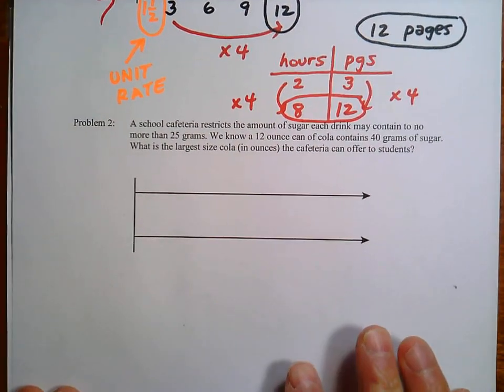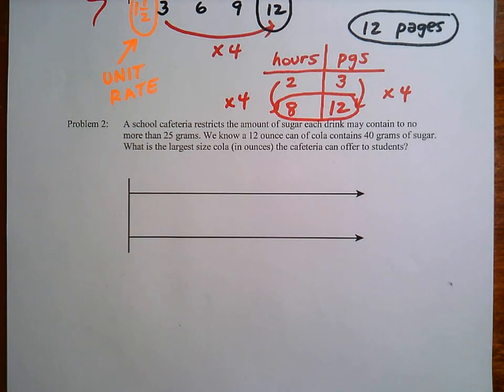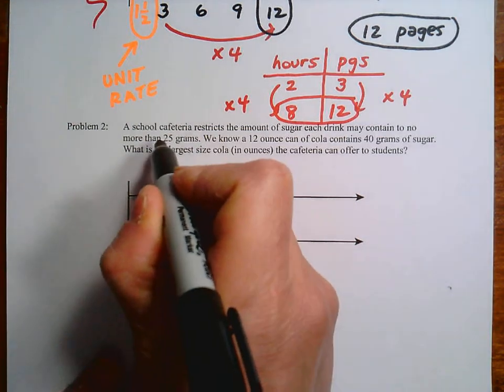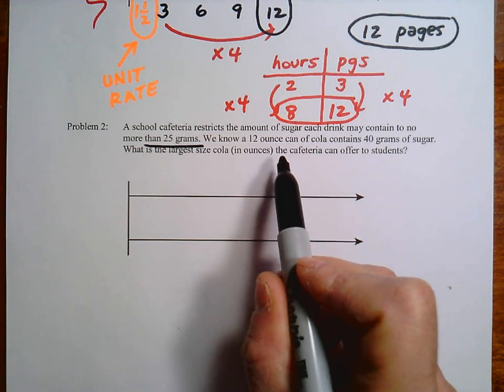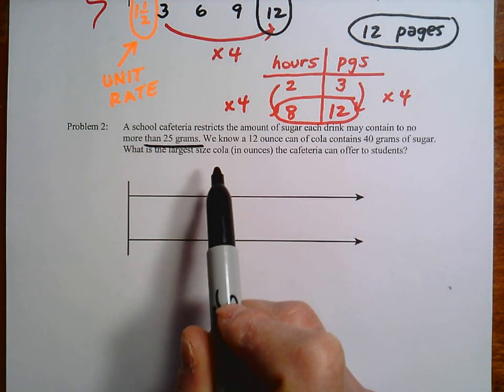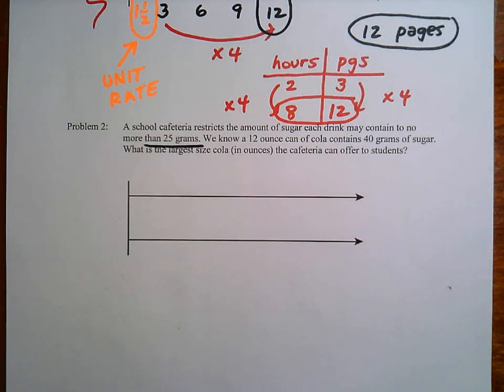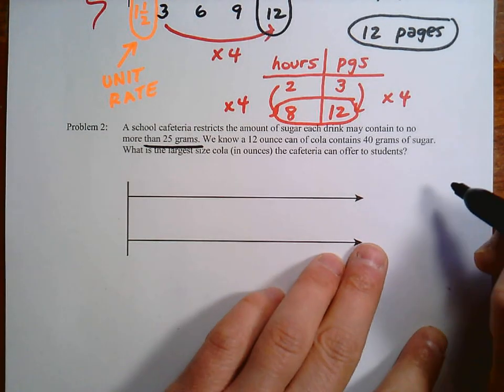Okay, so let's do one more here. This one is a little bit harder. I think you can tell just when you read the problem, but I'm going to talk about two different ways that you can approach this or the two different ways that I've seen. So this one here is saying, we're going to restrict the amount of sugar that the little kids have at lunchtime, to no more than 25 grams. So a 12-ounce can of soda has 40 grams of sugar. What's the largest sized cola in ounces that the cafeteria can offer to its students?